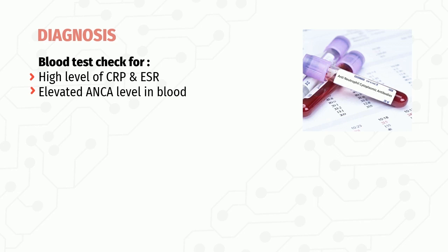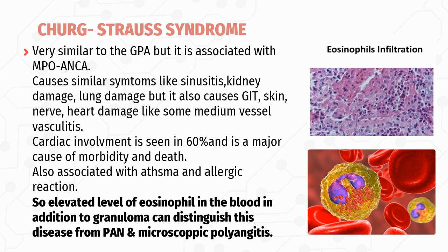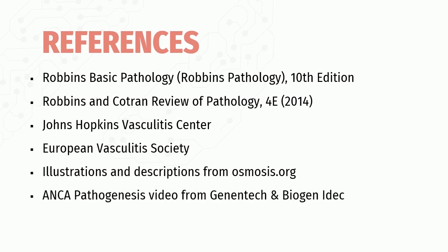Diagnosis of Wegener's granulomatosis is made by blood tests checking for high levels of CRP and ESR, and elevated ANCA autoantibody levels. Treatment is with corticosteroids and cyclophosphamide, though relapse may occur and can lead to renal failure. Churg-Strauss syndrome is very similar to granulomatosis with polyangiitis but is associated with MPO-ANCA. It causes similar symptoms — sinusitis, kidney damage, lung damage — but also causes gastrointestinal, skin, nerve, and heart damage. Cardiac involvement is seen in 60% of cases and is a major cause of morbidity and death. It is also associated with asthma and allergic reactions, and patients have elevated eosinophil levels in the blood, which — along with granulomas — can differentiate it from polyarteritis nodosa and microscopic polyangiitis.